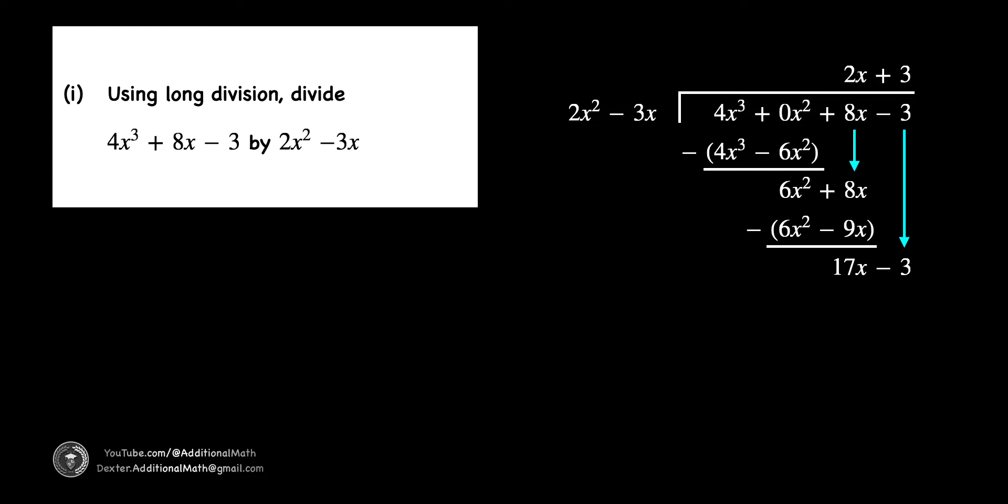We will complete the long division by bringing down the constant of negative 3. The long division process will end when the remainder can no longer be divisible by the highest exponent in the divisor.